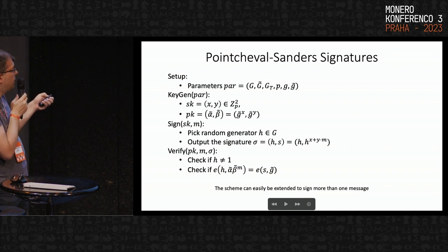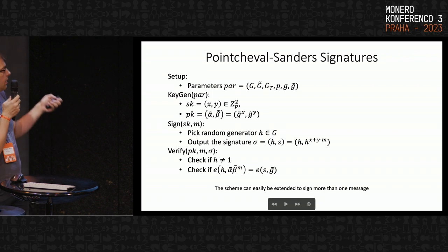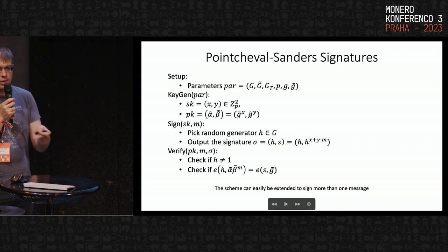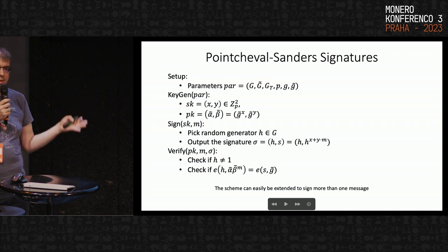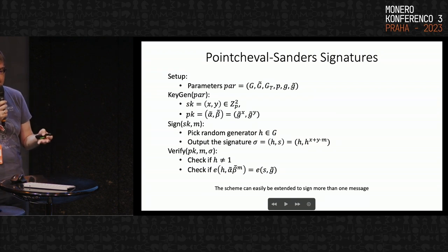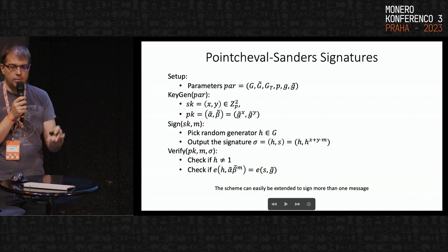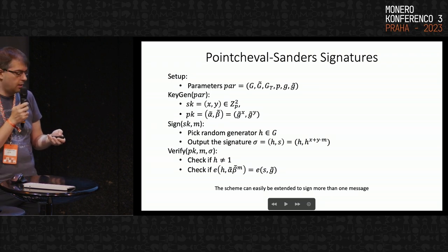For verification, you verify that h is indeed a generator and that the signature was correctly computed. Importantly, this generator h needs to be random and unique for each message that is signed. For the scheme to be unforgeable, it relies on an assumption that was created ad hoc for the scheme. It has been proven to hold in the generic group model, and several studies have confirmed that the assumption indeed holds.